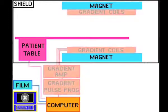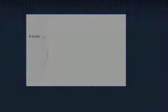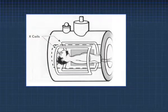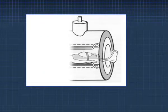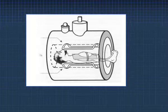Gradient coils are used to produce deliberate variation in the main magnetic field. There are usually three sets of gradient coils, one for each direction.